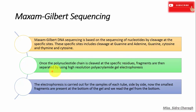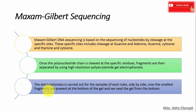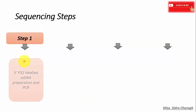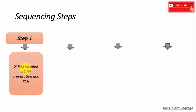Once the polynucleotide chain is cleaved at these four specific sites, fragments are separated by using high-resolution polyacrylamide gel electrophoresis. The electrophoresis is carried out for the sample of each tube side by side. The smallest fragments are present at the bottom of the gel and we read the gel from the bottom.